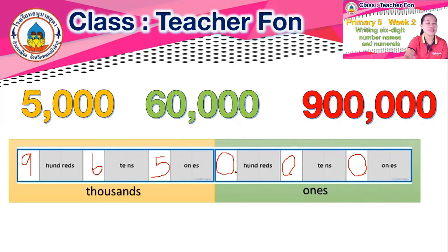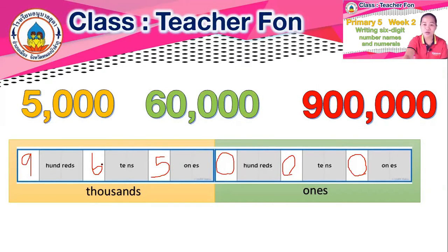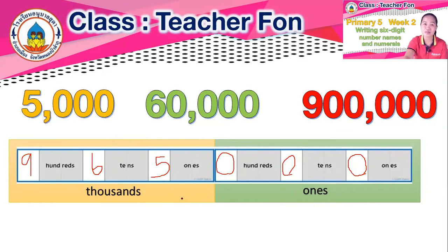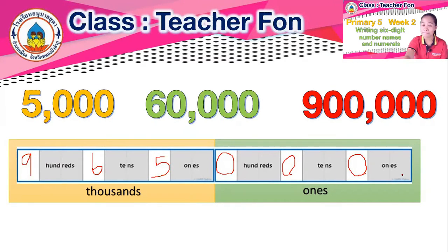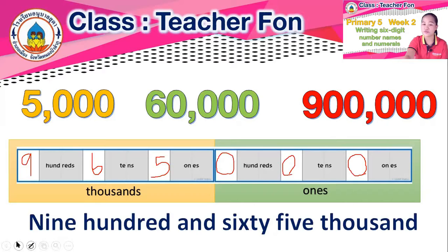Now, how do I write it in words — the number name? How do we say this number in English? In Thai we know it, but in English there's no 'saen' (hundred-thousand as a unit). We split it into hundreds within thousands: 965,000 is read as nine hundred and sixty-five thousand.